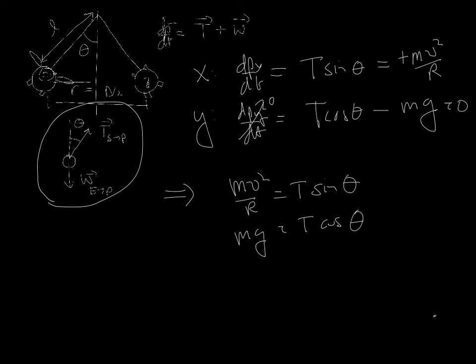And so you can see that if I take the ratio of these two, I'm going to get v²/rg. That's going to be equal to the tangent of theta. So there you have it.